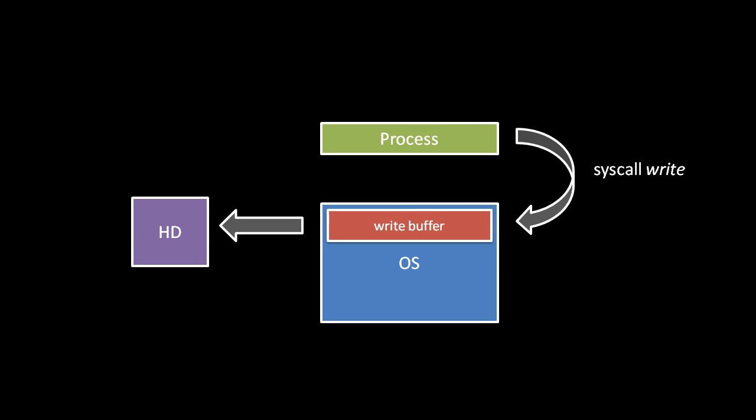Looking at the write system call in the default case: if we are writing to a file on a storage device like a hard drive, the data is not actually directly copied from the process to the hard drive. Instead, the call to write copies that data from the process to a buffer in memory controlled by the operating system. Then from there, the operating system writes the data from the buffer to the actual storage device. Even though this scheme involves copying the data twice, it still makes sense for performance reasons, since IO devices like hard drives are relatively very slow compared to the CPU. So the write system call can return after the data has been copied to the buffer, and the process can continue getting work done while that data is being copied to the actual device.